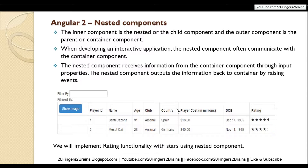The inner component is the nested or child component, and the outer component is the parent or container component. When developing an interactive application, the nested component often communicates with the container component. The nested component receives information from the container component through input properties, and outputs information back to the container by raising events. This communication part we'll see in the next part.